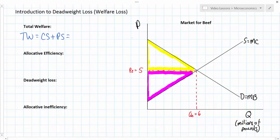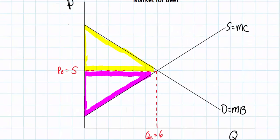To calculate consumer and producer surplus we find the areas of the two triangles and add them together. The demand curve starts at a price of $9 — at any price above $9 there will be zero demand for beef. Likewise, at a price of $1 producers are willing to start providing beef; at any price below $1 no producers will supply beef. For consumer surplus, we use one half base times height: nine minus five times six divided by two gives us four times six divided by two — a total consumer surplus of $12 million.